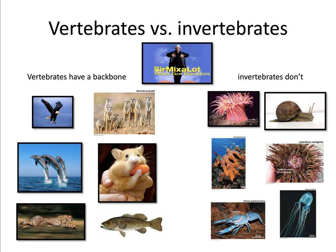Another important thing to know about animals is the distinction between vertebrates versus invertebrates — two major groups or classifications of animals. Like the Sir Mix-a-Lot song Baby Got Back, but in this case we're talking about a backbone. So vertebrates have a backbone. Examples of vertebrates might be meerkats, eagles, hamsters, dolphins, a cheetah, or a fish. If you looked at their skeleton, they have a spinal column — they have a backbone. So these are considered vertebrate animals.